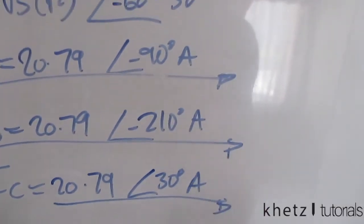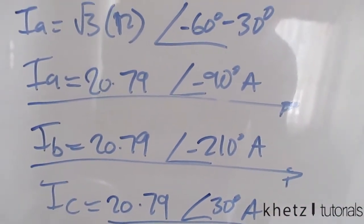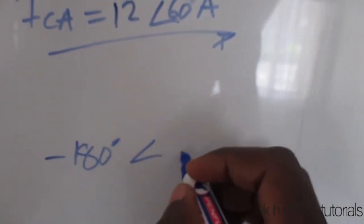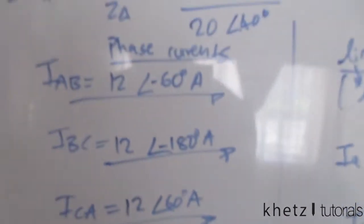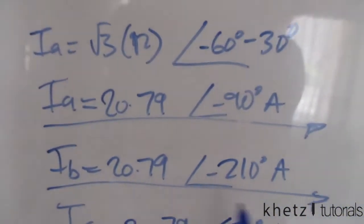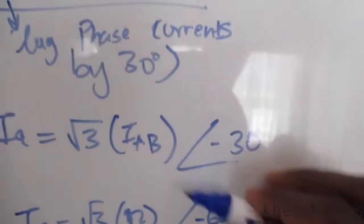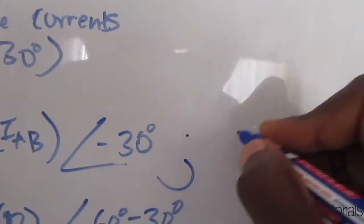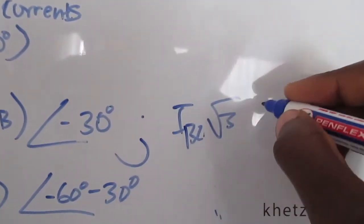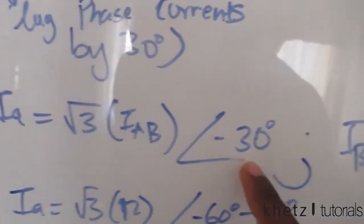You'll notice in the textbook they have an answer of negative 150 degrees for IC. This could be because they used the reference angle differently or to keep angles within a standard range. I'm giving that to you as homework — find how they got that value, which is translated differently in the textbook. There's another way to approach this, keeping everything in line with the 30-degree lag relationship.